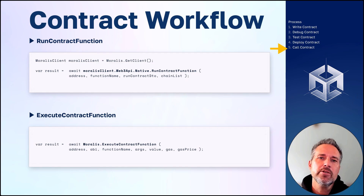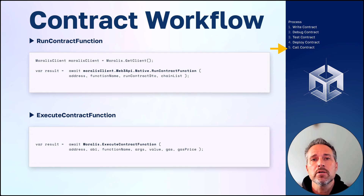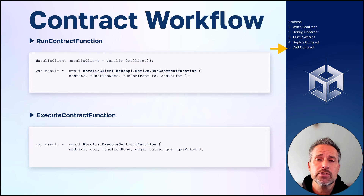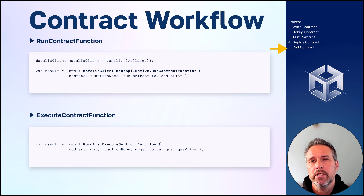And finally, from the Unity side, we're going to call that deployed smart contract. We've got two things we can do here: we can use run contract function or execute contract function. To see more of the details about that, take a look at the video that I linked to earlier. The quick highlight is that run contract function is good for calling functions on your smart contract that are read-only and don't change the state, and if you do have read and write operations, then you would use the execute contract function.